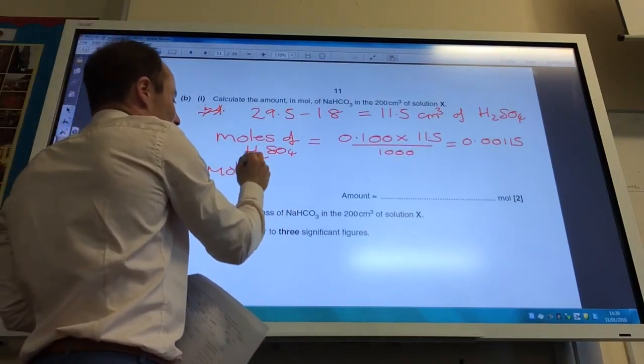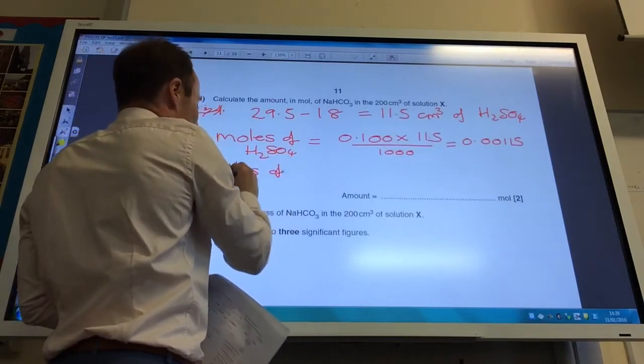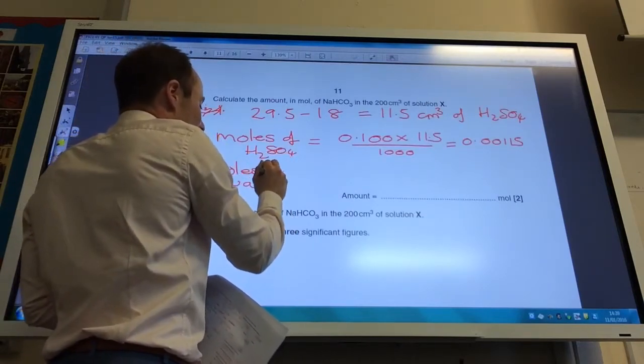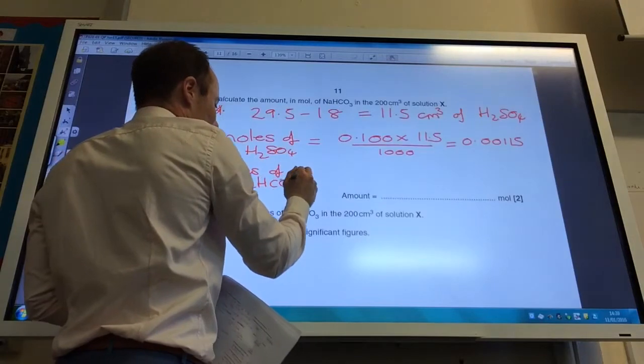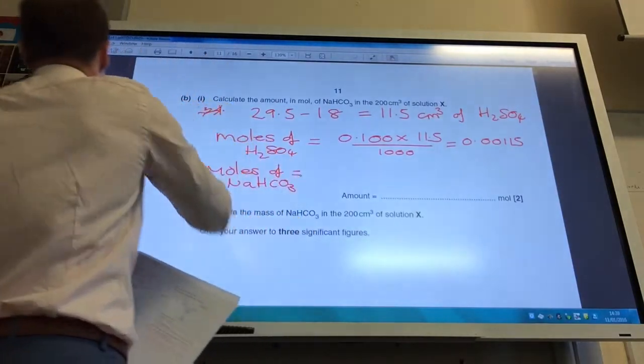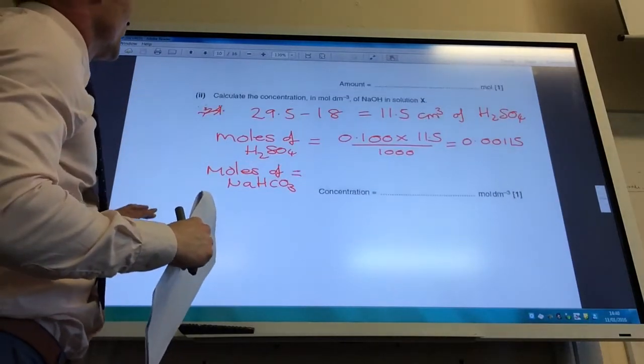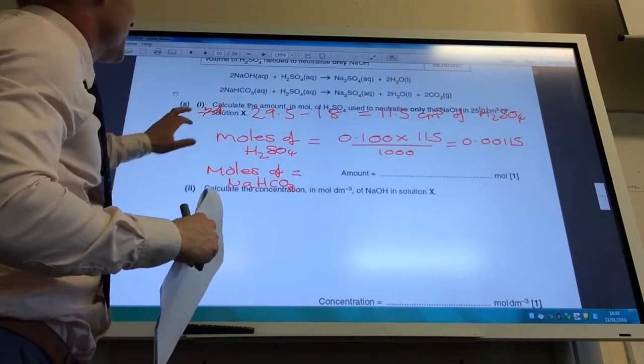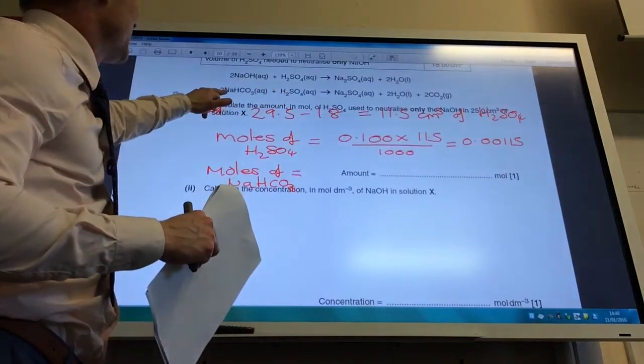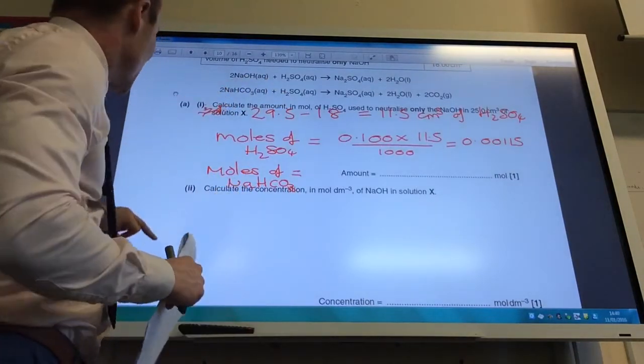I now need to work out the moles of sodium hydrogen carbonate. If you look at the equation, which I will now attempt to do, hopefully you can see, for every one sulfuric acid I need two sodium hydrogen carbonates.